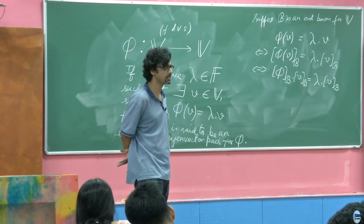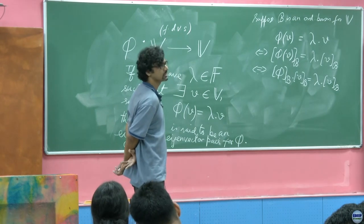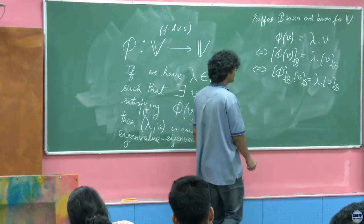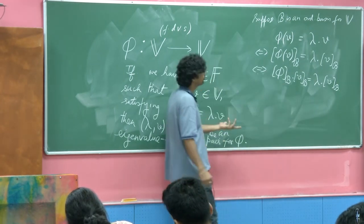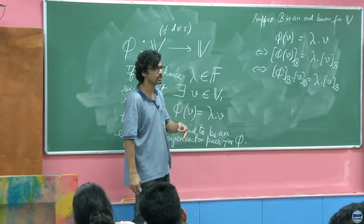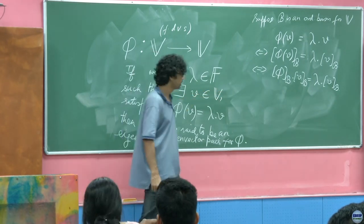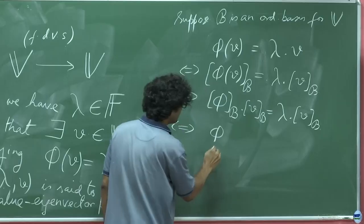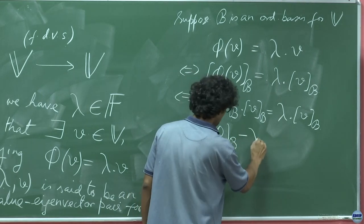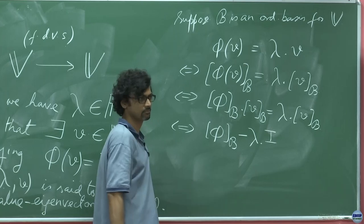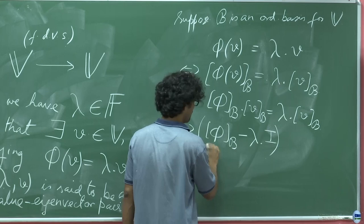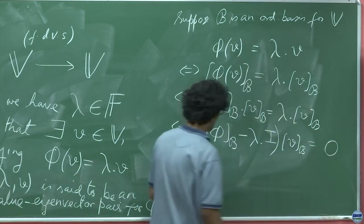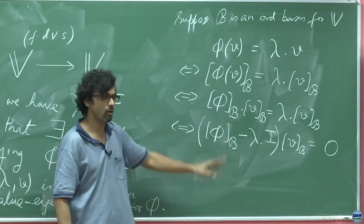If the field is R, it is exactly a Euclidean space R^n; if it is C or something else, it is at least going to look like a matrix equation. For our purposes we will focus on R or C. This implies that (A minus lambda times the identity matrix) acting on the coordinate representation of v leads to 0.